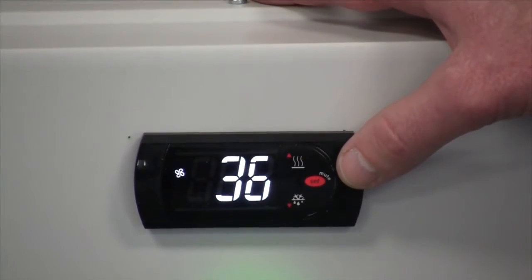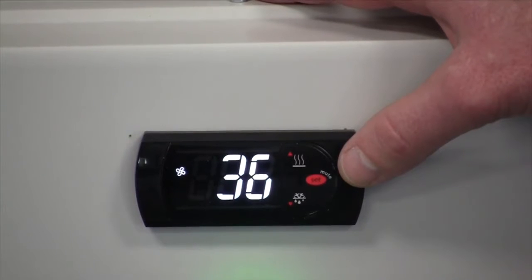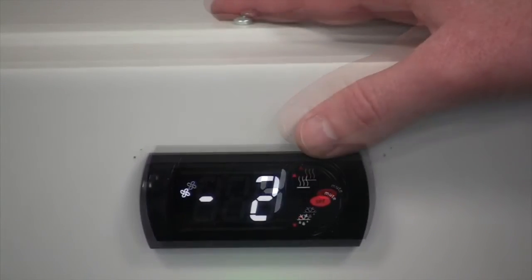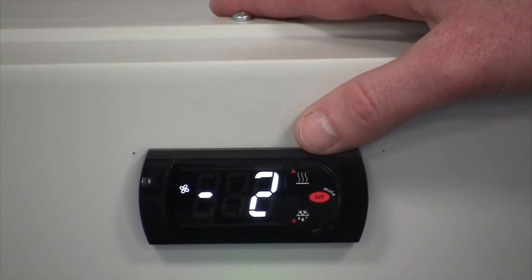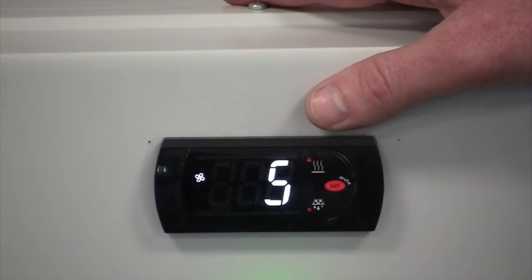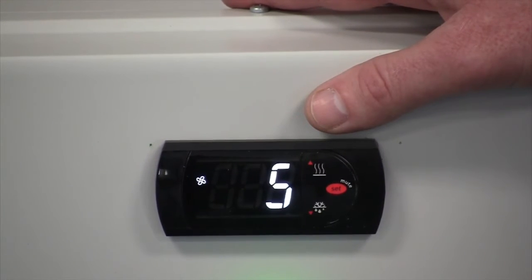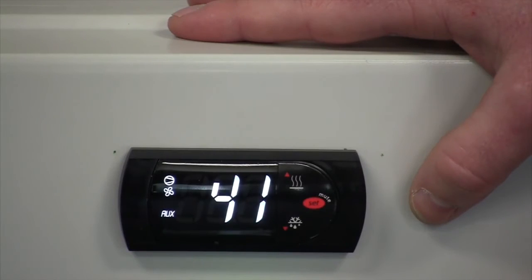The factory preset for refrigerators is 36 degrees F with a positive 4 degree differential. The factory preset for freezers is minus 2 with a positive 5 degree differential. The set point is a cutout temperature. Now we'll show you how to change the set point.